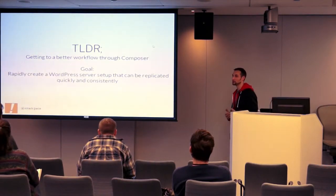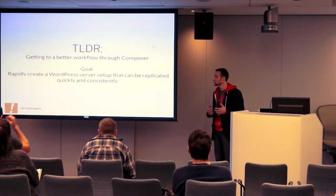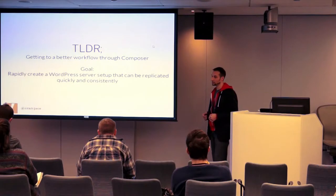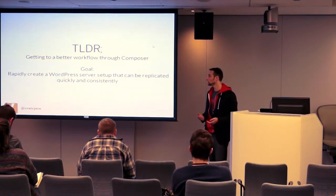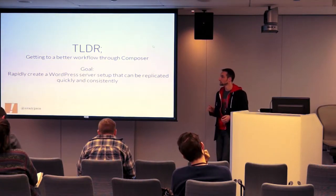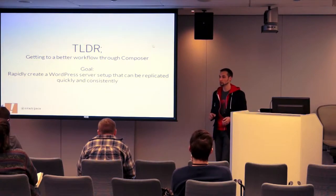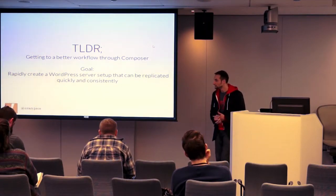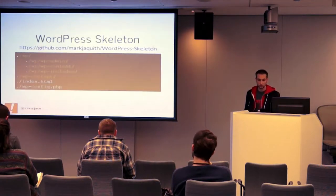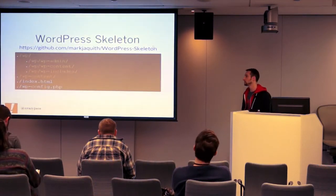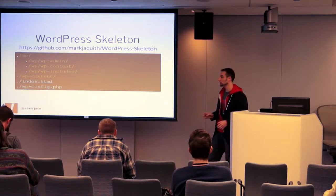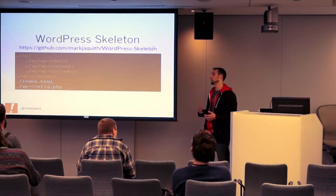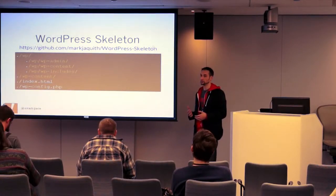What we're trying to do is get a better workflow. We want to be able to set up a dev environment very quickly — set it up once in production or staging, and replicate that in a consistent and automated manner for local or staging environments. We're going to be using the WordPress skeleton. If you're familiar with this, it's a repo that Marc Jacobs put together as a best practice on how you can store WordPress in version control.